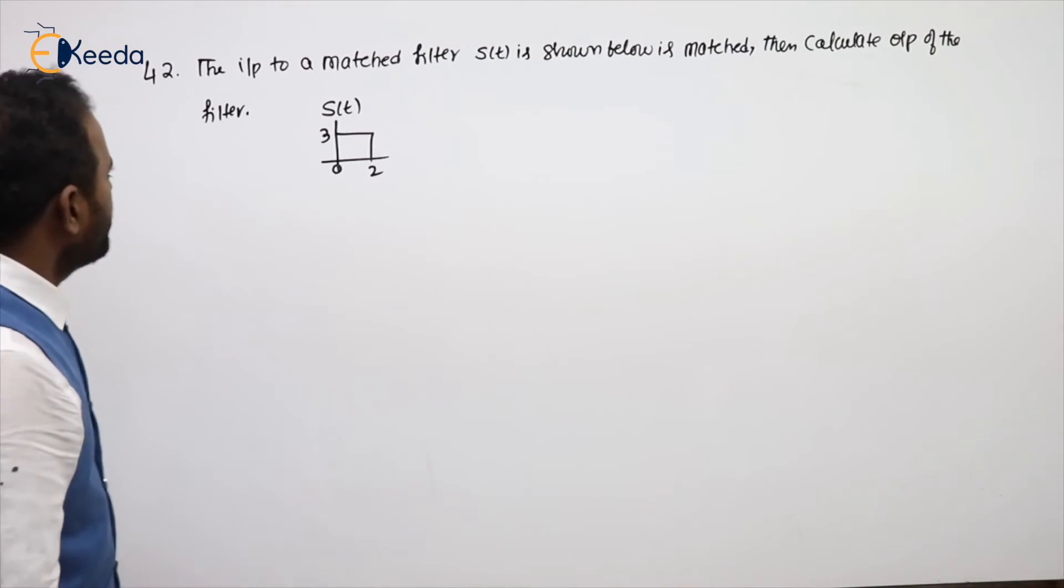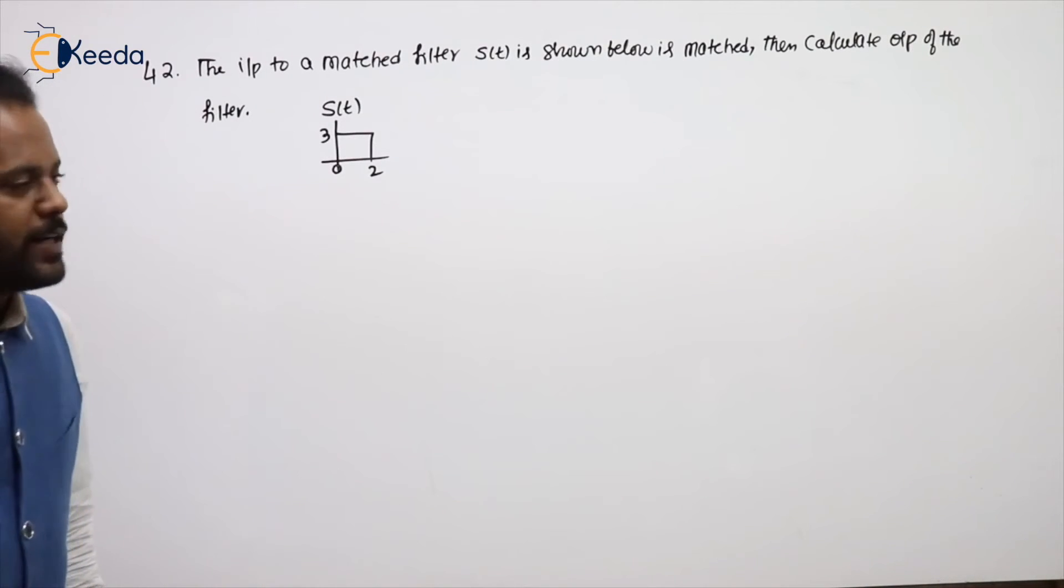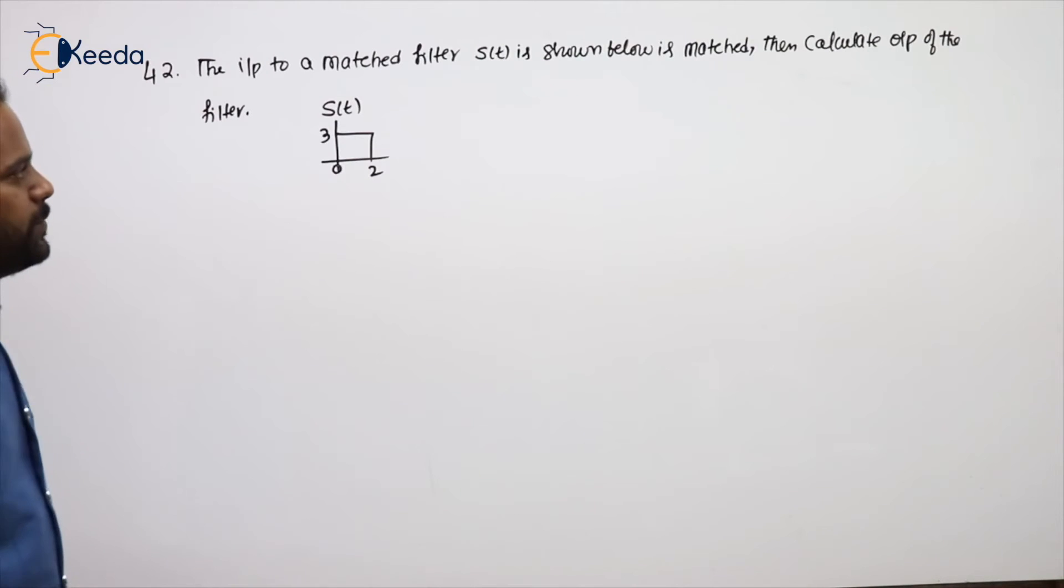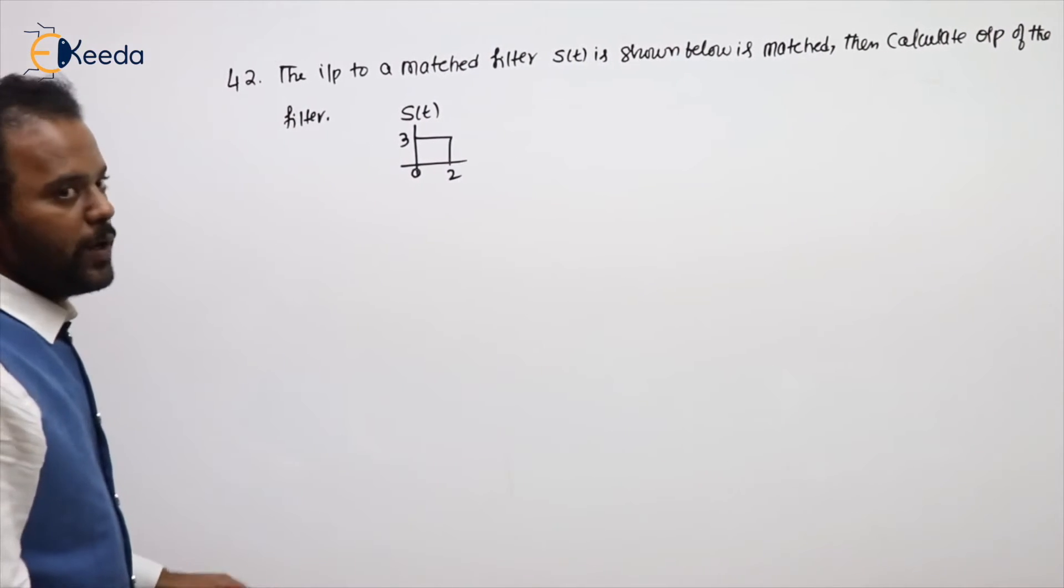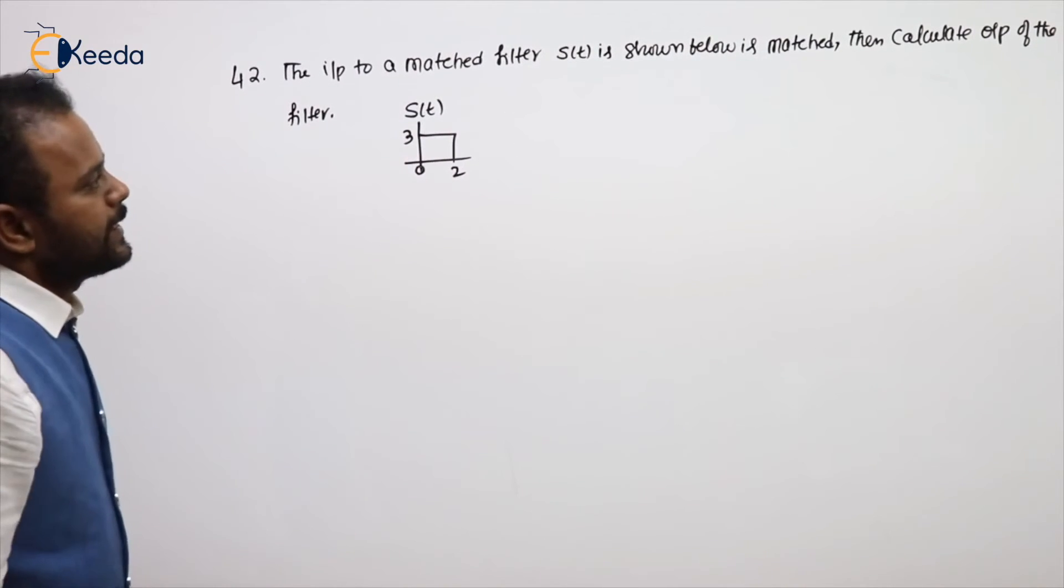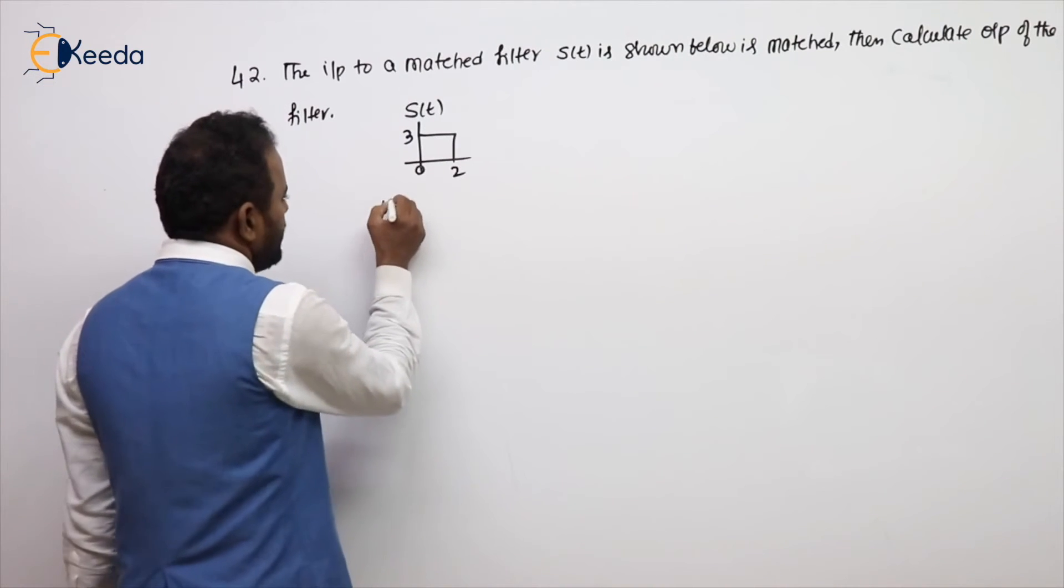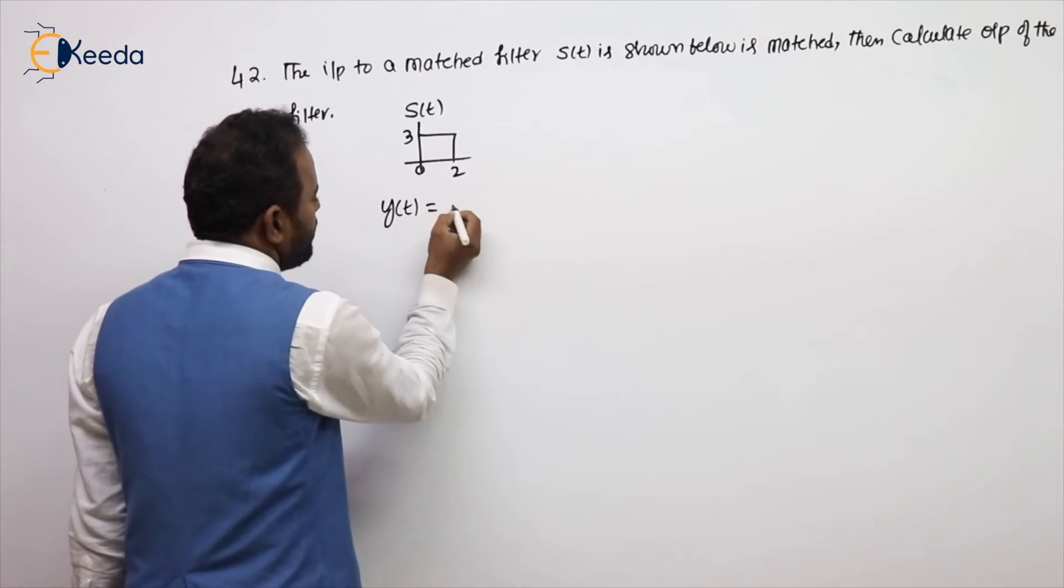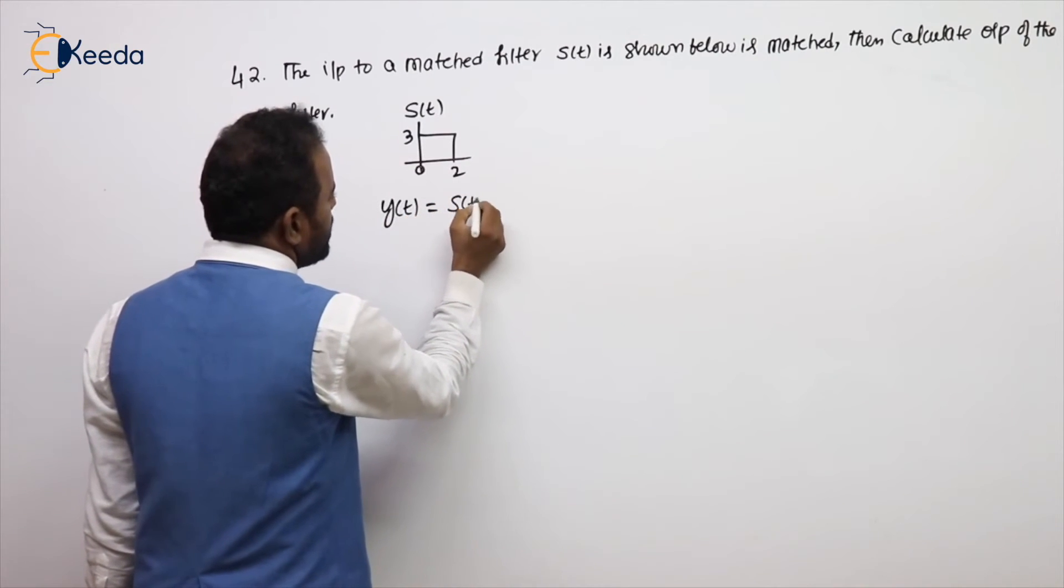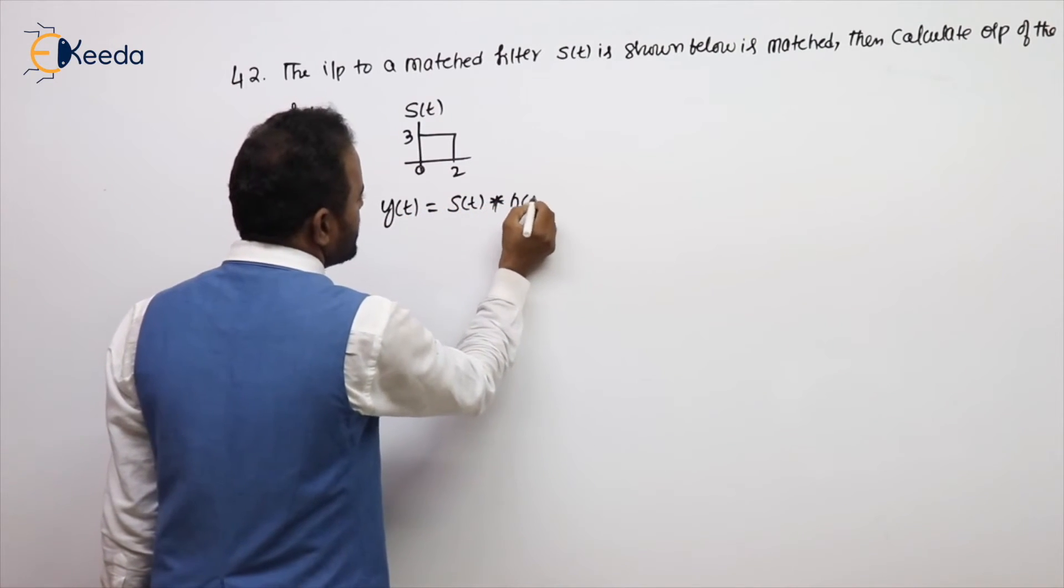See the next problem. The input to a matched filter S of T shown below is matched. Then calculate output of the filter. We already know that, not only for this problem, for any filter output is input convolution with the impulse response.